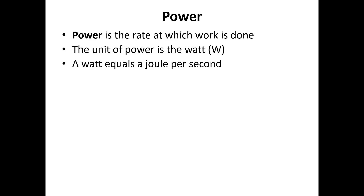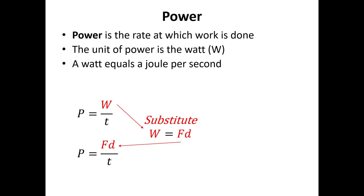Power is the rate at which work is done. The unit of power is the watt, equal to one joule per second. Whenever you hear 'rate,' it involves something over time. We use P = W/t, or the combined equation P = FD/t. You need any two of three variables to solve for the third — or three of four variables in the combined equation.